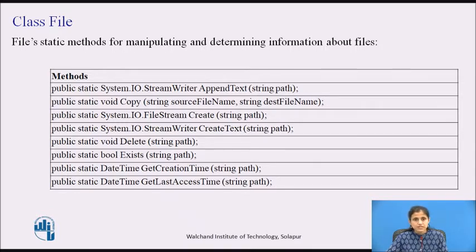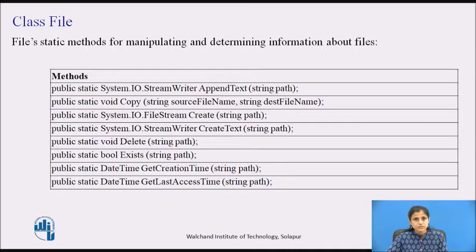All file methods require the path to the file that we are manipulating. The static methods of the file class perform security checks on all methods. In members that accept a path as an input string, the path must be well-formed, else an exception will be raised. The path can refer to a file or directory.